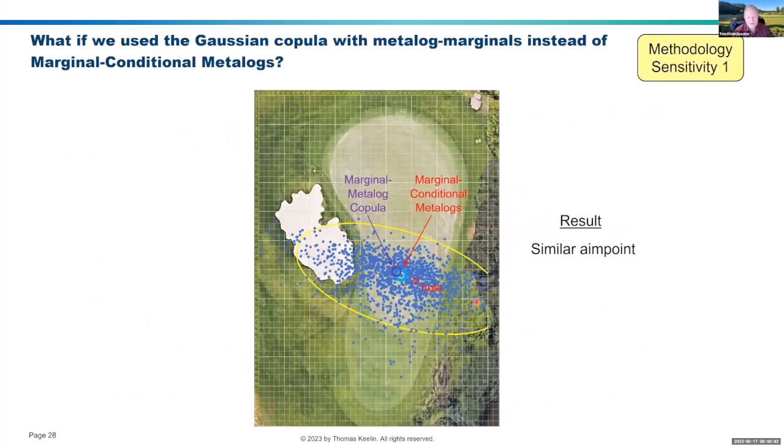So, the question is, how would that affect your choice of aim point? And the answer, interestingly enough, is if you used method B, the copula method, you'd end up with almost exactly the same aim point. In fact, it's only one yard difference.